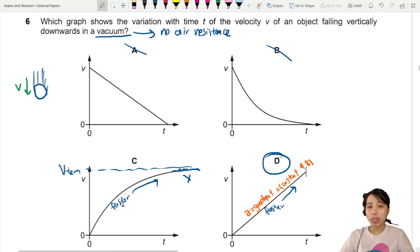In the other case, the gradient is actually changing. Eventually, gradient will become zero when you reach terminal velocity. Maybe you start off down here. The acceleration is 9.81.